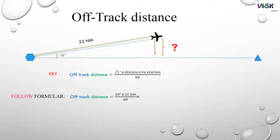Off-track distance equals 10 degrees multiply by 22 nautical miles and divide by 60, which equals 3.6 nautical miles. Off-track distance is 3.6 nautical miles.